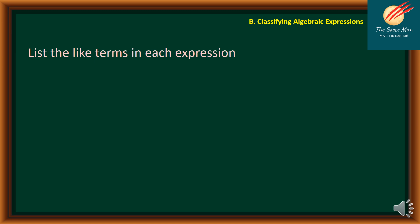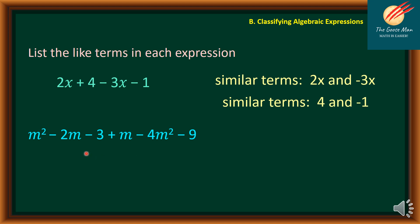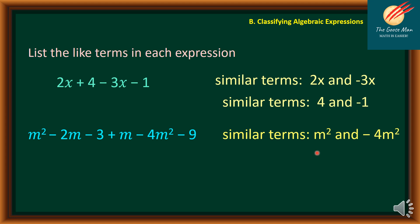In 2x plus 4 minus 3x minus 1, the similar terms are 2x and negative 3x (same variable x, same exponent), and 4 and negative 1 are similar terms with the same degree of 0. In m squared minus 2m minus 3 plus 4 minus 4m squared minus 9, the similar terms are m squared and negative 4m squared, also negative 2m and m, and the constants negative 3 and negative 9.